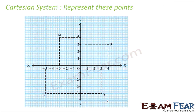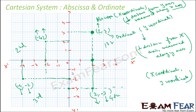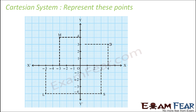Now let's identify the coordinates of given points B, M, L, and S. For point B: the x-coordinate — distance along the x-axis — is four, and the y-coordinate — distance along the y-axis — is three. So point B is four comma three. For point M: the x-coordinate is minus three and the y-coordinate is four.